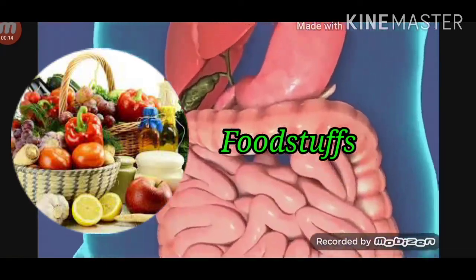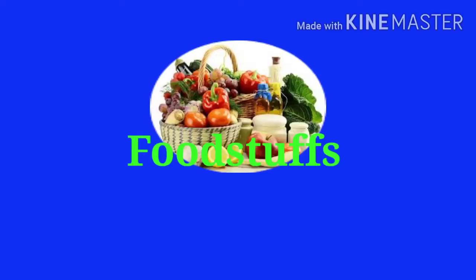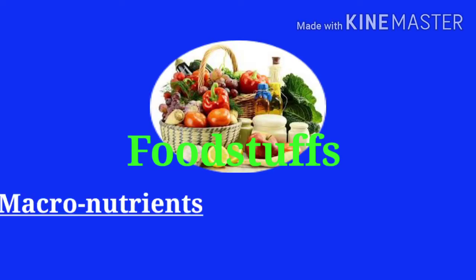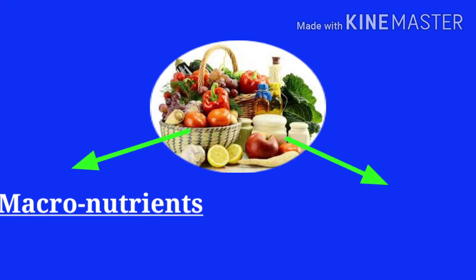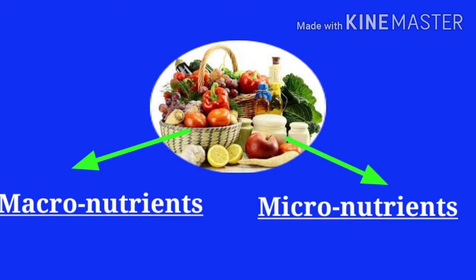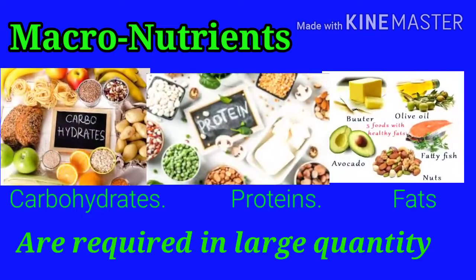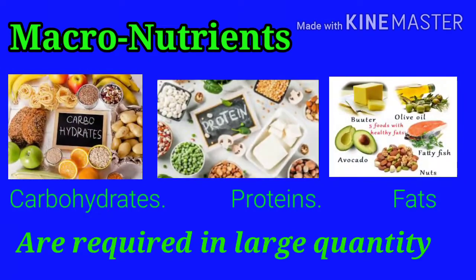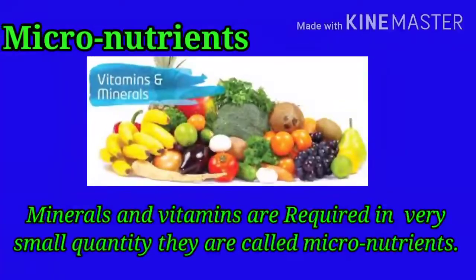We get several types of nutrients from foodstuffs. Nutrients can be classified into two types: macronutrients and micronutrients. Nutrients like carbohydrates, proteins, and fats are required in large quantity — these are macronutrients. Minerals and vitamins are required in very small quantity and are called micronutrients.